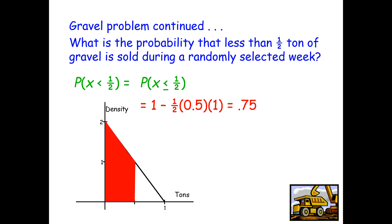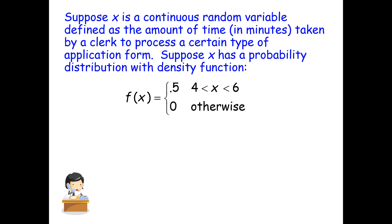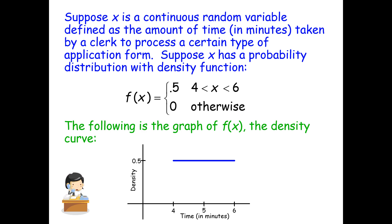Let's take a look at another example. We're going to suppose that x is a continuous random variable defined as the amount of time in minutes taken by a clerk to process a certain type of application form. Suppose that x has a probability distribution with a density function such that f(x) equals 0.5 when x is between 4 and 6, but it's 0 otherwise. The graph of the density curve is shown here.